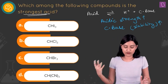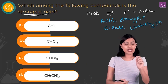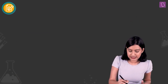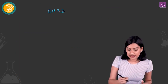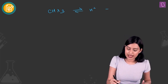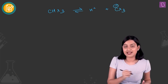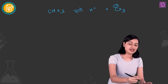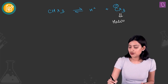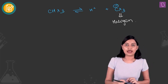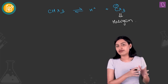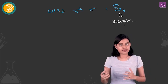For iodoform, chloroform, and bromoform, we have CHX3 → CX3⁻ + H⁺. You have a carbanion with halogen groups attached. In halogens, the inductive effect dominates over the mesomeric effect, so the minus-I characteristic kicks in.